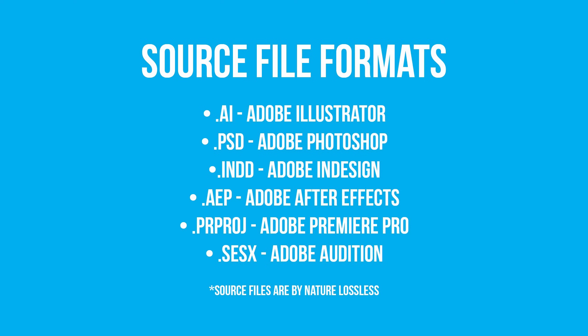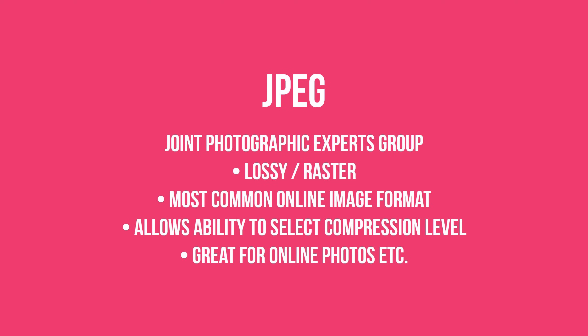Source files are an ideal format to do all your editing work in before you export to the final version. First up for individual formats is JPEG, which stands for Joint Photographic Experts Group. JPEG is a lossy format and also a raster format, meaning it works on a pixel grid at a set size. It's currently the most common online image format, although PNG is getting closer to that.